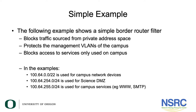Let's look at this simple border router filter which blocks traffic sourced from private address space, protects the management VLANs of the campus, and blocks access to services only used on campus. In the examples we'll use 100.64.0.0/22 for campus network devices, 164.254.0.0/24 for the science demarcation zone, and 164.255.0.0/24 for campus services like the web server, the mail server, and so on.